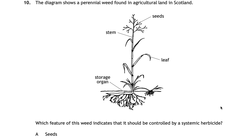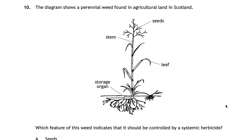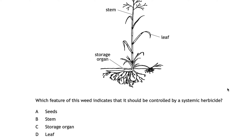For question ten, a perennial weed found in agricultural land is shown, with parts labelled: seeds, stem, leaf, and storage organ. The question asks which feature indicates it should be controlled by a systemic herbicide. The correct answer is C — the storage organ. Systemic herbicides spread through the entire plant system and kill everything off, especially the storage organ, which prevents the weed from regrowing. If you only killed the stem or leaf without destroying the storage organ, the perennial weed can return.